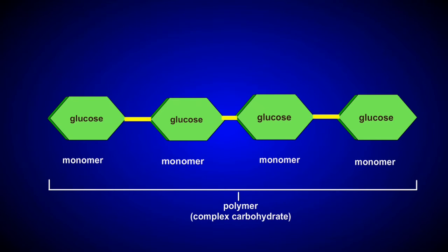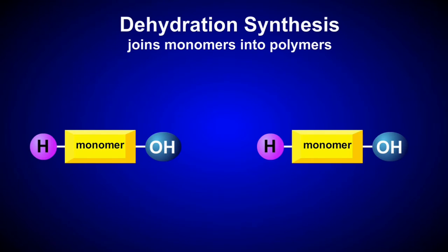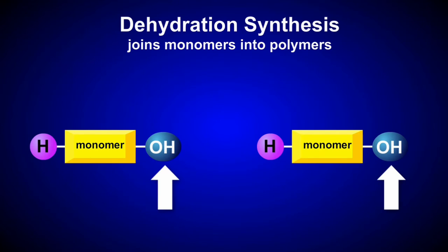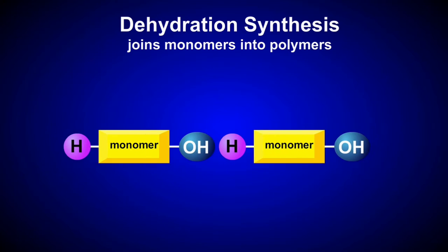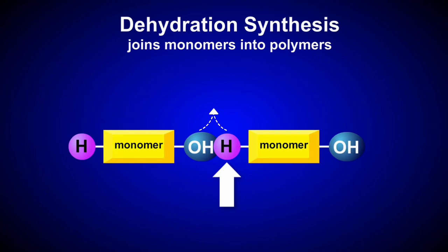Biological polymers are formed by dehydration synthesis reactions. As you can see here, each of the monomers in this reaction has a hydrogen, or H, and a hydroxyl, or OH, group. In the course of the reaction, the hydrogen is removed from one monomer and the hydroxyl group from the other. The hydrogen and hydroxyl group combine to form water, and a bond links the two monomers.